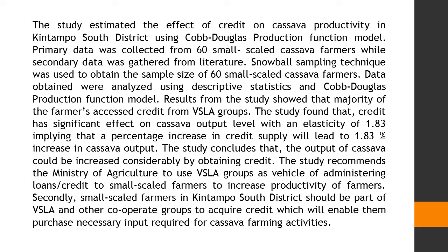Results from the study show that the majority of the farmers accessed credit from VSLA groups. The study found that credit has a significant effect on cassava output level with an elasticity of 1.83, implying that a one percentage increase in credit supply will lead to a 1.83% increase in cassava output.